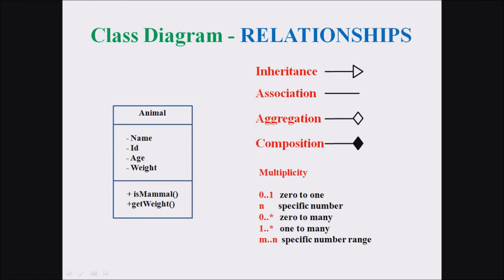Those multiplicity factors are 0 to 1, a specific range, 0 to many, 1 to many, and a specific number range starting from a number to an ending number. Now let us discuss this example — we are considering a banking system.